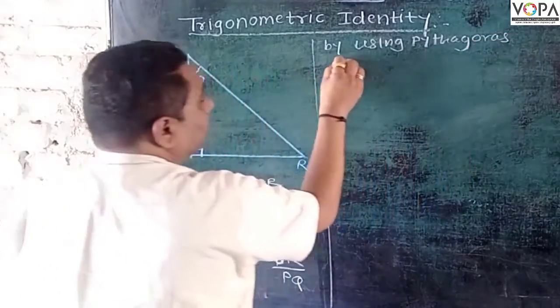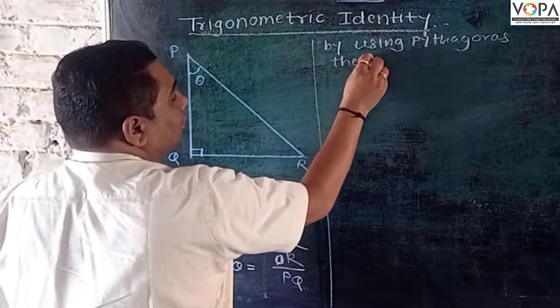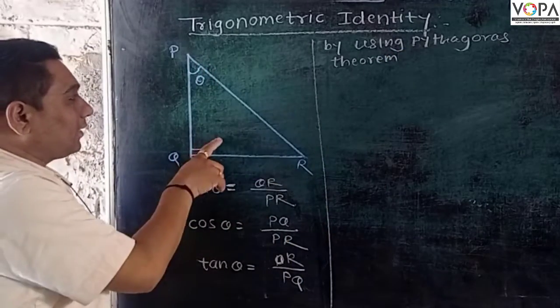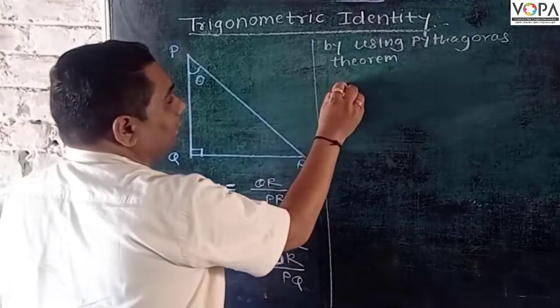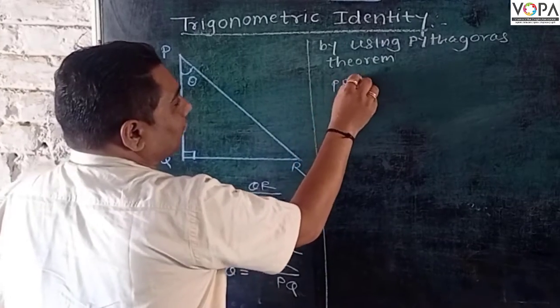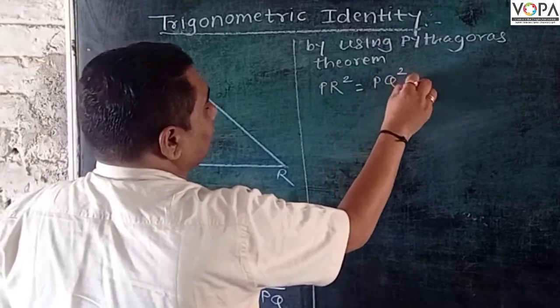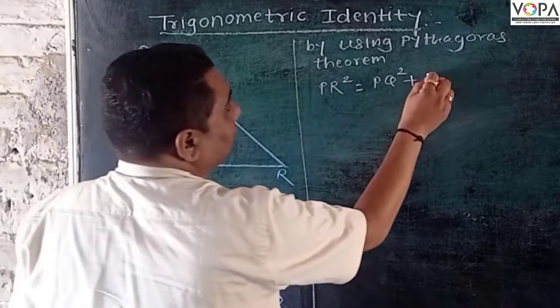Now, by using the Pythagoras theorem for this right angle triangle, we can say that PR square is equal to PQ square plus QR square.